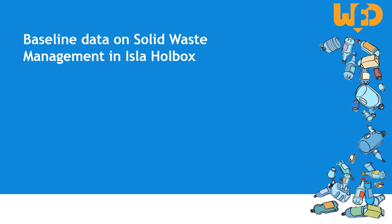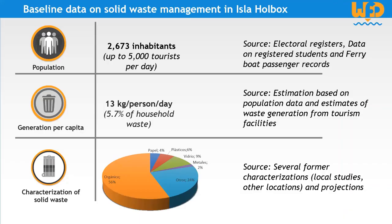We will now move on to the main quantitative data required to model the waste streams within the Waste Flow Diagram. The first data entry is the population, mainly used to estimate the amount of waste generated in the study area. In Isla Holbox, the permanent population is quite low, around 2,300 inhabitants, according to data from electoral registry and educational system. The non-permanent population, composed mainly of tourists and workers from the tourism sector, is much larger, with up to 5,000 tourists daily during peak season. The waste generation per capita was obtained by summing up household waste and waste from tourism and commercial facilities, giving it a very high value in relation to international standards.